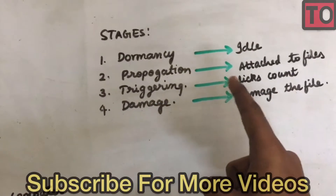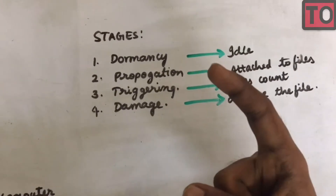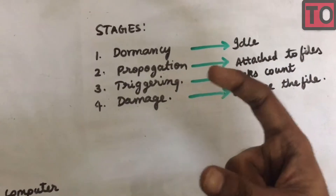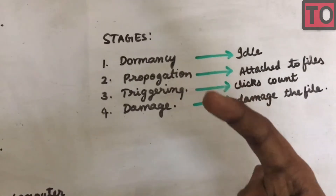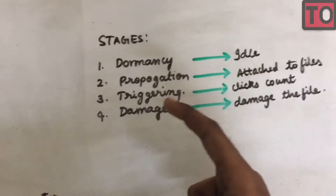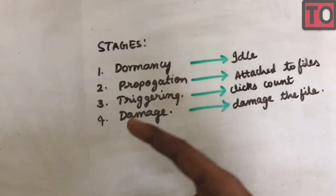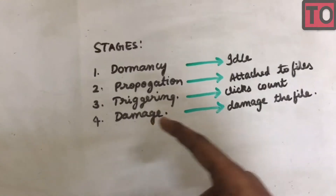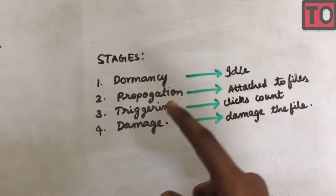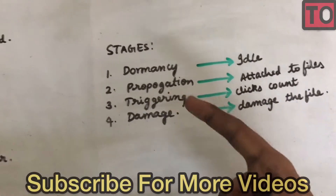Triggering is click counts — for example, if a file is clicked 4 or 5 times, the virus is connected. If you click and open the files, it will be easy to attack with the virus. The files are totally damaged by the virus.